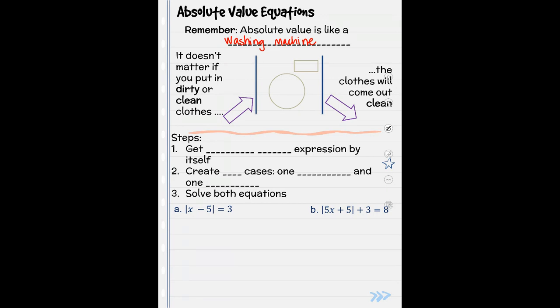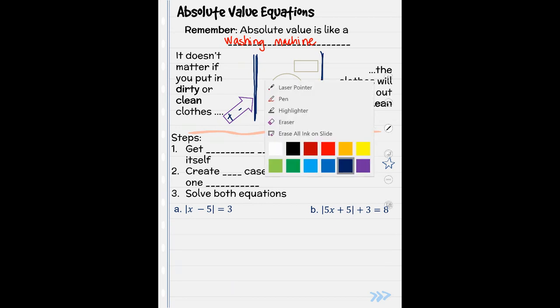Okay, so this is our absolute value symbol, remember, right here. So that means it doesn't matter what you're putting in to our washing machine, whether it is a positive number or a negative number, you're going to get a positive number. No matter what goes in, what comes out is our positive numbers. So we remember that.